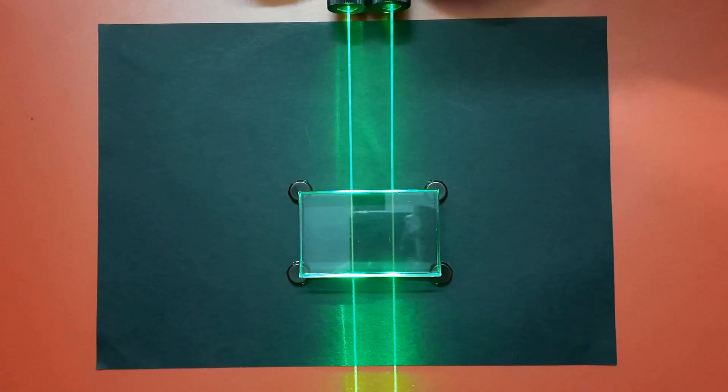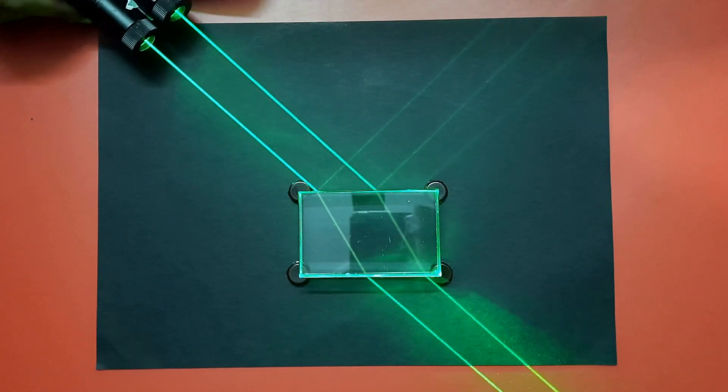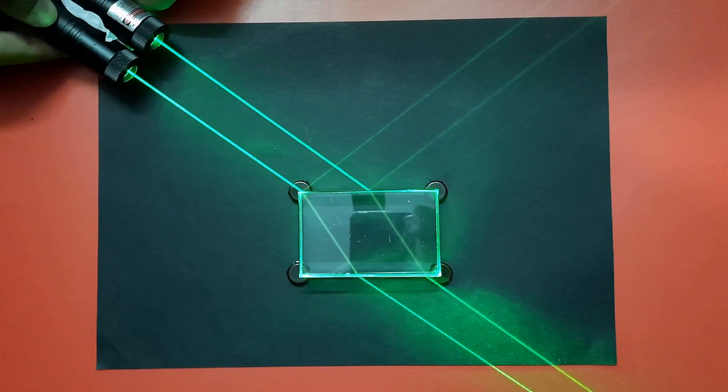Now we will pass both the laser beams through the glass slab. Observe that the same amount of bending is taking place for both the laser beams as the angle of incidence is same for both.